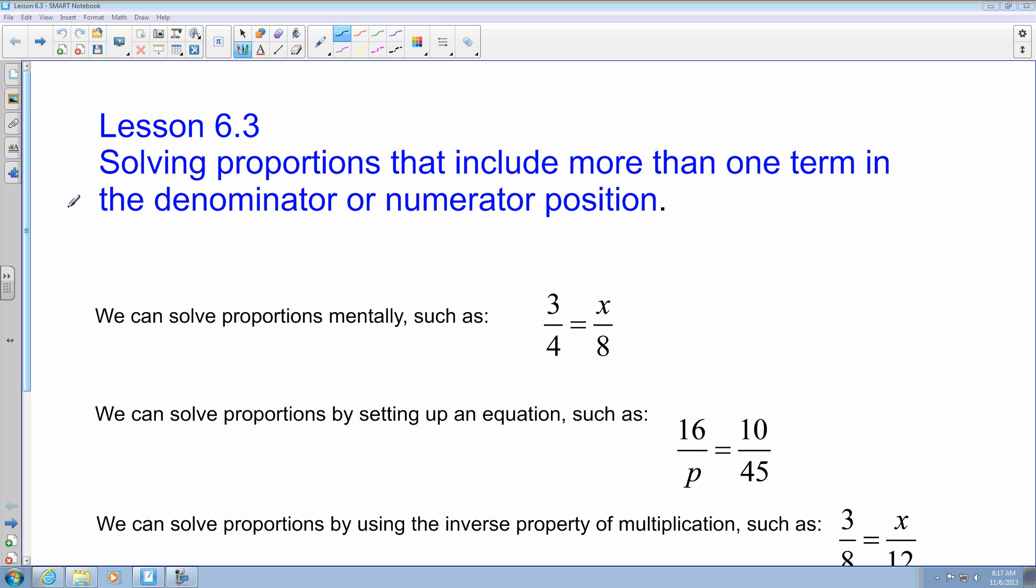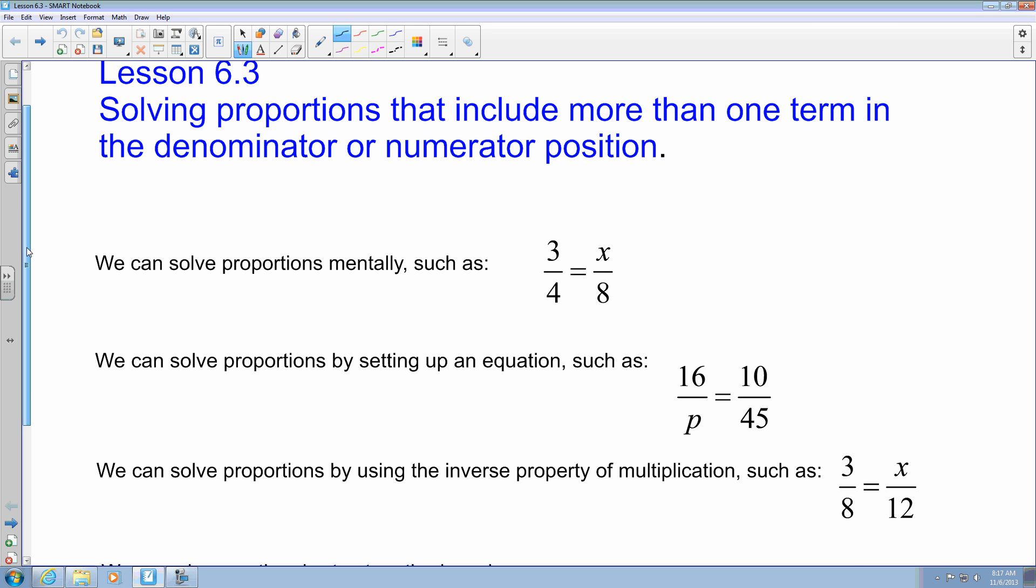If you took a look at the first one here, where I have 3 fourths equals x over 8, you can solve the proportion mentally by saying, okay, I know that if I multiply this by 2, I'm going to get 8. So that means I have to multiply this by 2 here, which means x equals 6.